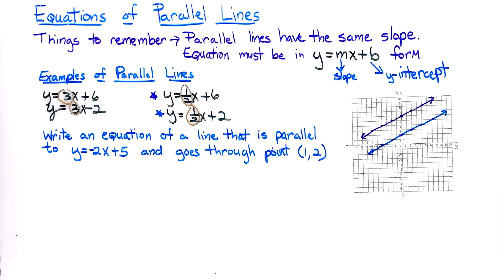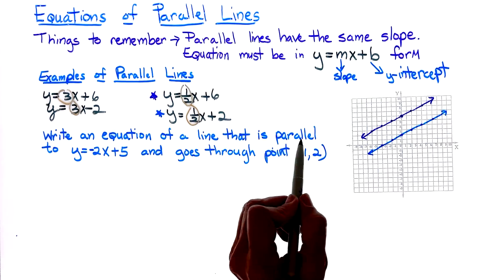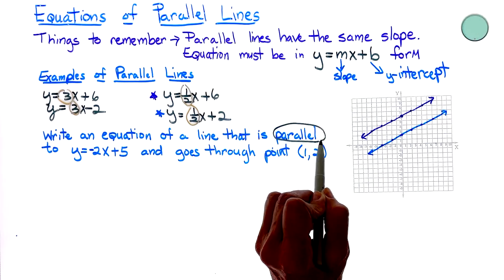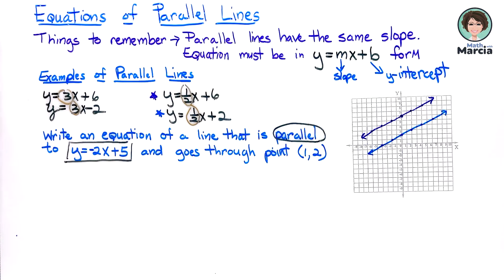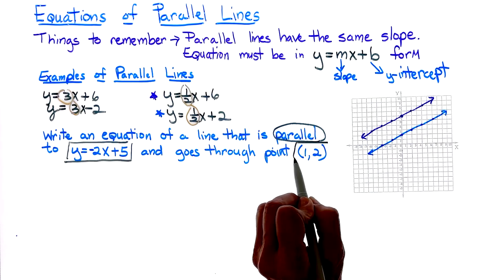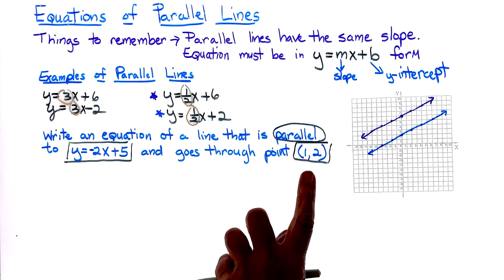What happens if you're given a problem such as this, where it says write an equation of a line that is parallel to y equals a negative 2x plus 5 and goes through the point 1, 2. Let's go ahead and mark the text. We know that we want to find a line that is parallel to this given line, and we know that we are going to have it go through point 1 and 2.